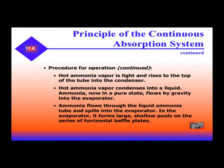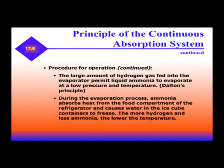Hot ammonia vapor is light and rises to the top of the tube into the condenser, where it condenses into a liquid. Ammonia, now in its pure state, flows by gravity into the evaporator, through the liquid ammonia tube, and spills into the evaporator forming a large shallow pool on a series of horizontal baffle plates. The large amount of hydrogen gas fed into the evaporator permits liquid ammonia to evaporate at low pressure and temperature. During evaporation, ammonia absorbs heat from the food compartment and causes water in ice cube containers to freeze. The more hydrogen and less ammonia, the lower the temperature.